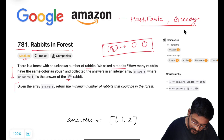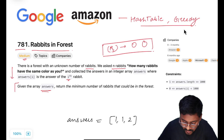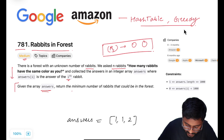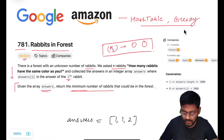Now we are given the answers array. Return the minimum number of rabbits that could be in the forest. We have to minimize the answer — the minimum number of rabbits that can be in the forest.